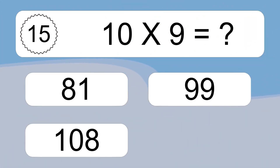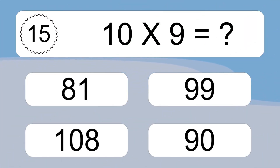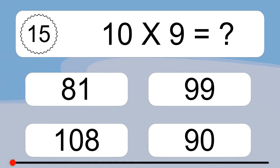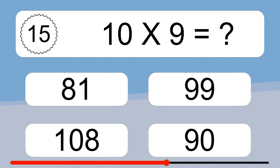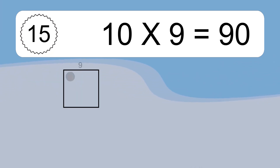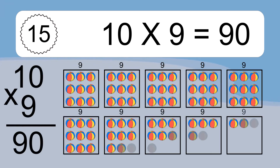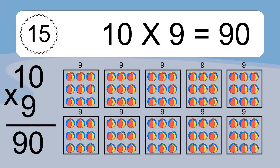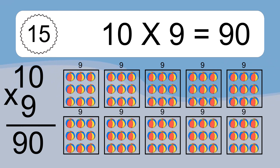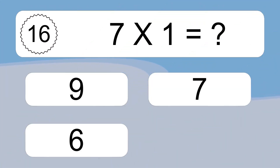10 times 9 equals what? 10 times 9 equals 90. We have 10 boxes, and each box has 9 colorful balls inside. If you count all the balls in all the boxes together, you will have 10 times 9 balls. This equals 90 balls.